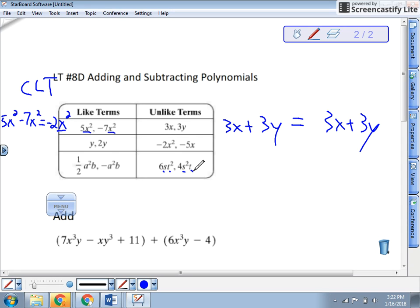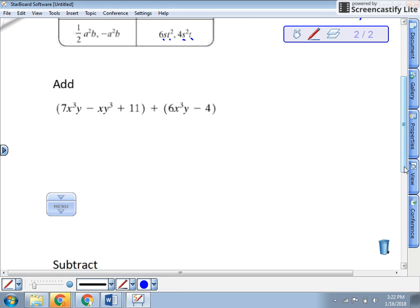So how do we add? Really simple. When we add them, we're just going to combine like terms. I like to remove the parentheses, and then I like to group them by like terms. So I have x to the third y, x to the third y. So I'm going to say 7x to the third y plus 6x to the third y. Now I've got a minus that xy to the third, and there are no more of those. So that's the one after right there. And then I've got a plus 11. I'll circle this one. And a minus 4. So plus 11, minus 4.